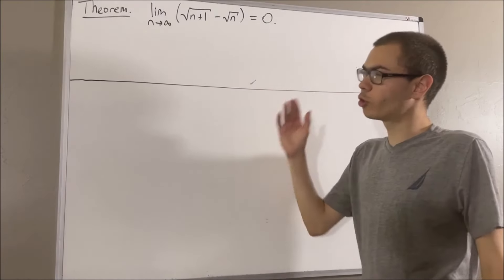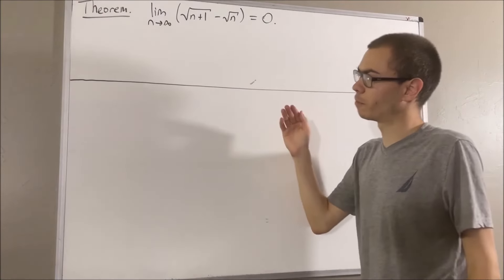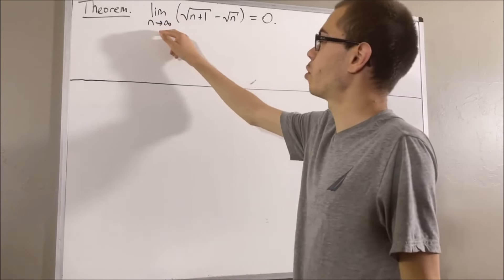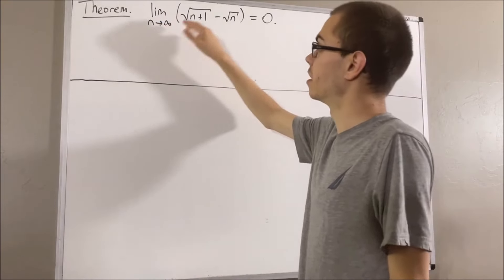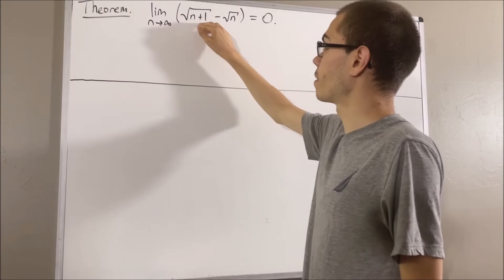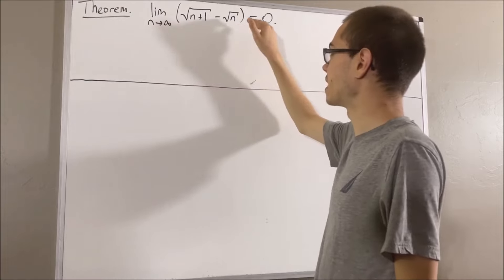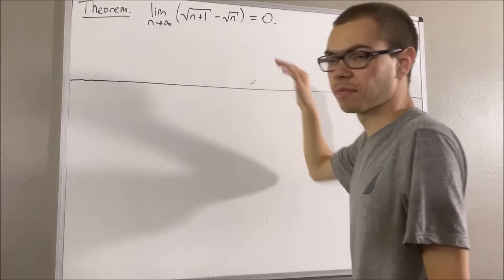In this video, we're going to prove the following theorem: the limit as n approaches infinity of the square root of n plus 1 minus the square root of n is equal to 0.